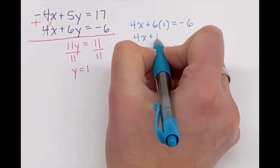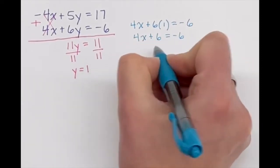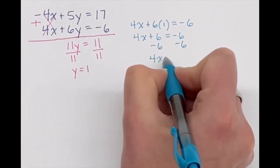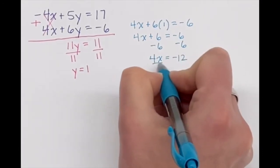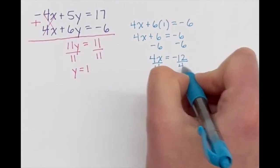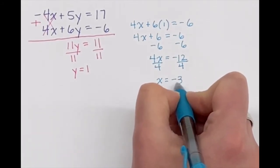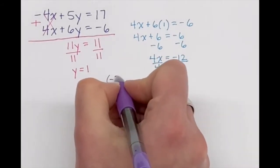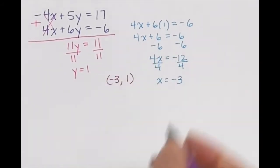4x plus 6 is equal to negative 6. If I subtract 6 from both sides, I get 4x is equal to negative 12. Divide both sides by 4. I get x is equal to negative 3. So my final answer is negative 3, 1.